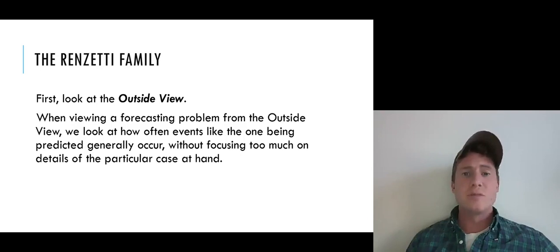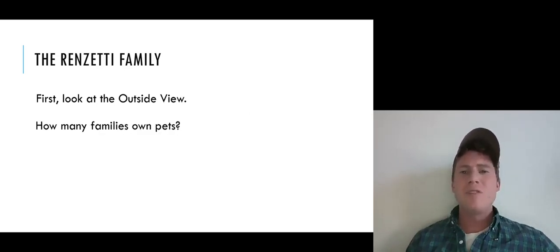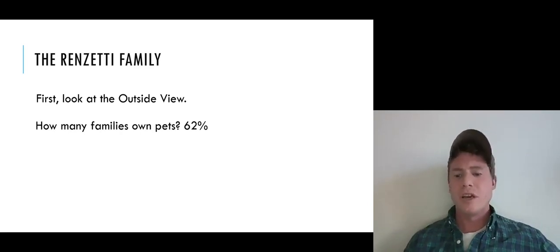When viewing a forecasting problem from the outside view, we look at how often events like the one being predicted generally occur without focusing too much on the details of the particular case at hand, which can sometimes bog us down. In this case, we're trying to predict whether the Renzettis have a pet. By taking the outside view, we'd ask a very general question like, how many families in general own pets in America? And we find that about 62% of them do, or at least according to Tetlock's numbers. So that really should give us our initial anchor, our initial estimate for how likely the Renzettis are to have a pet. Doing this, we're looking at the outside view. We're not looking at the specific information we've given about this family, the specific details of this case, but thinking more generally.